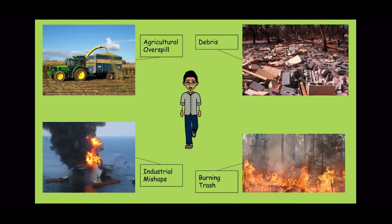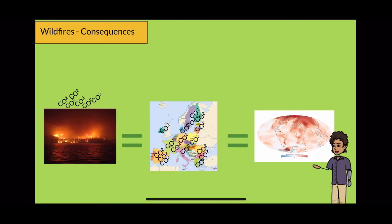Some examples of causes are burning trash and debris, industrial mishaps, and overspills. Every year, fires are releasing a large scale of carbon dioxide equal to the size of the European Union, which ultimately contributes to the rates of global warming.